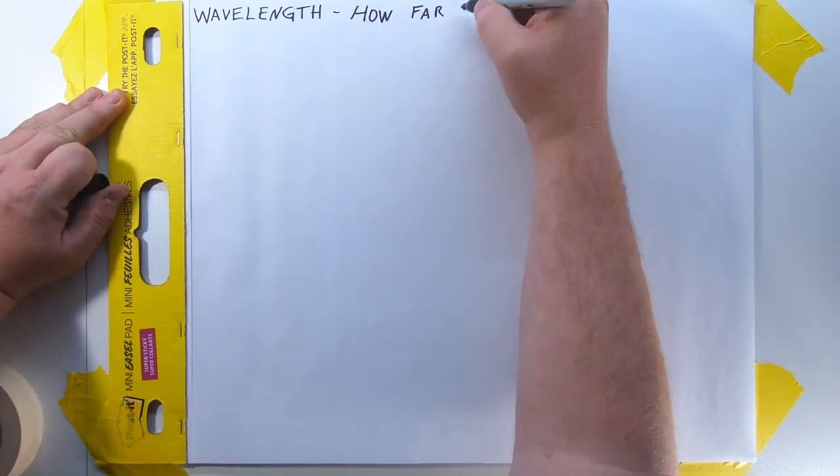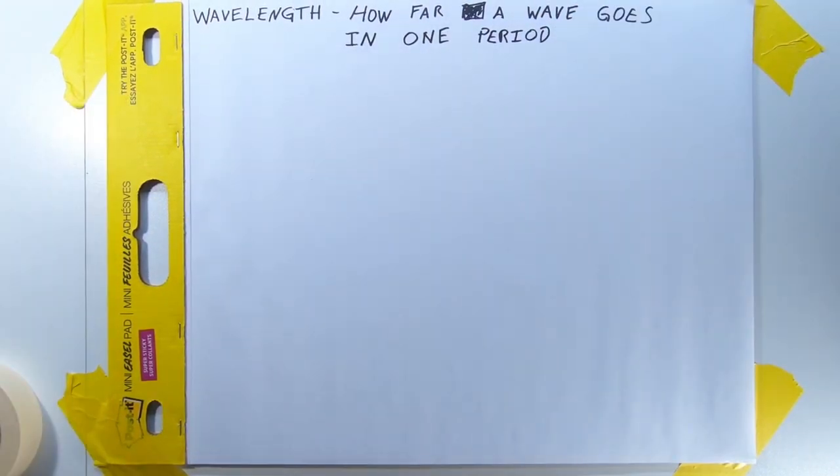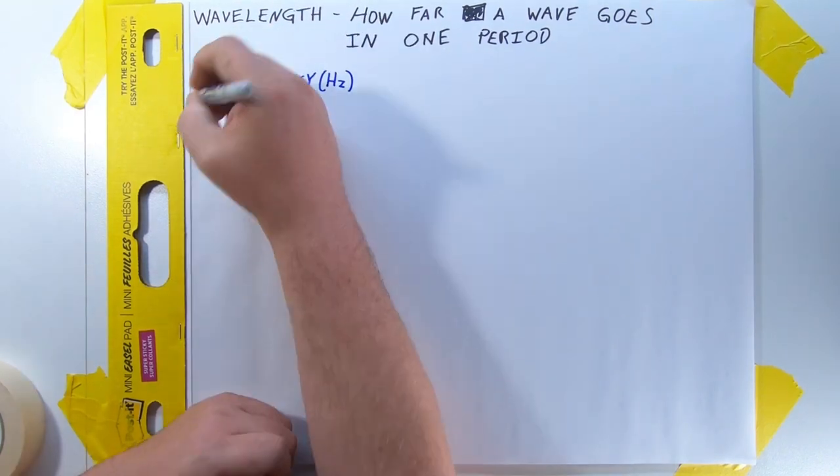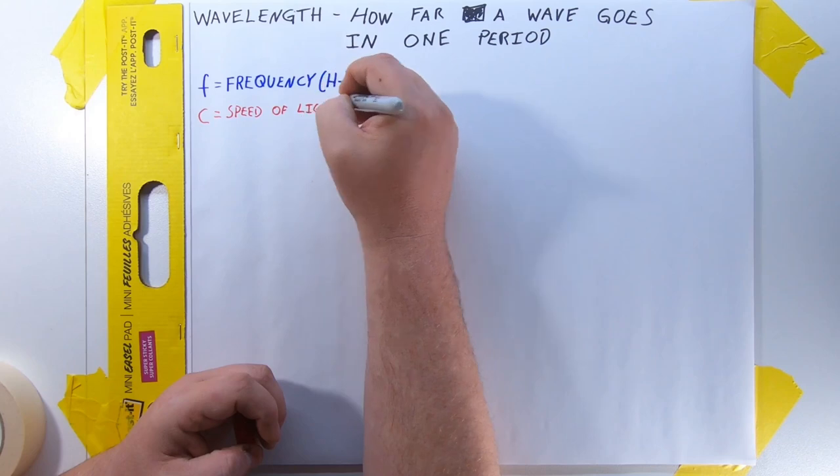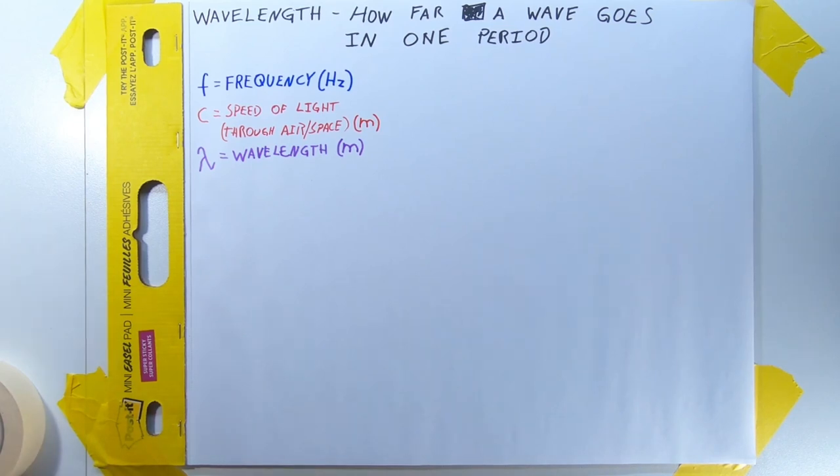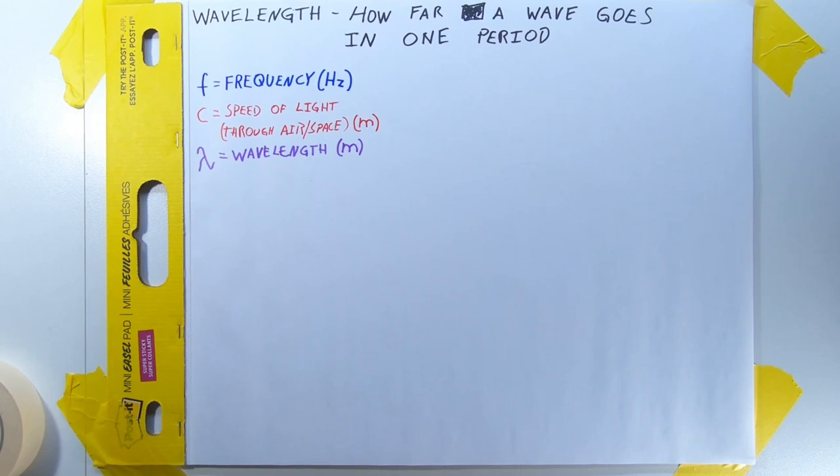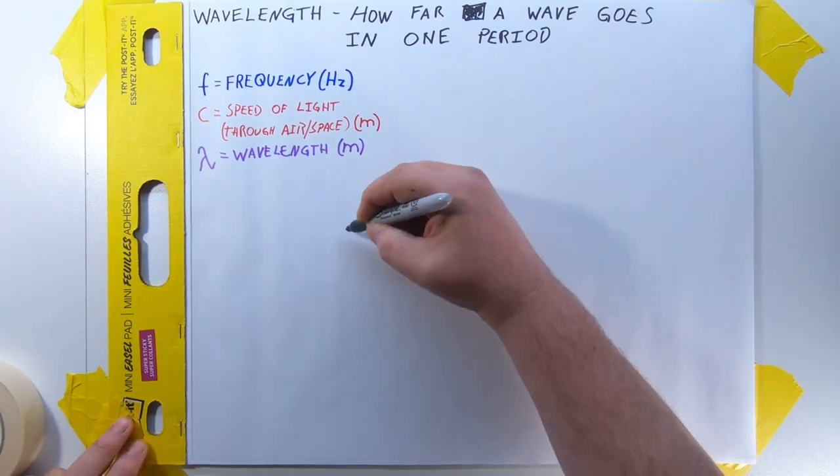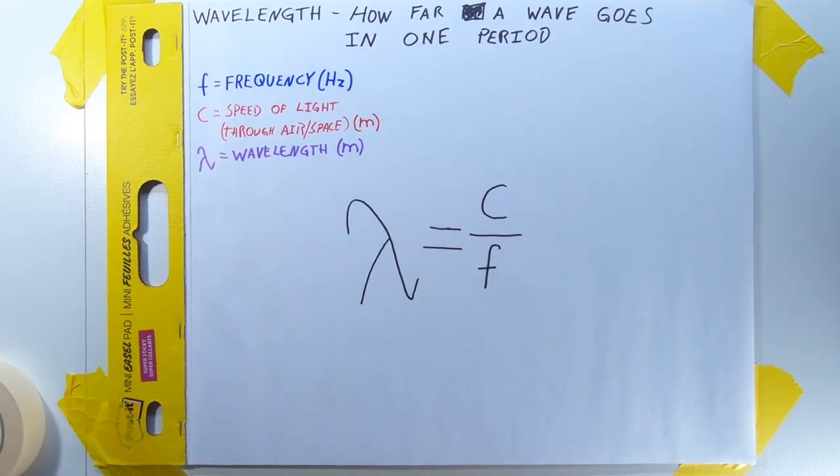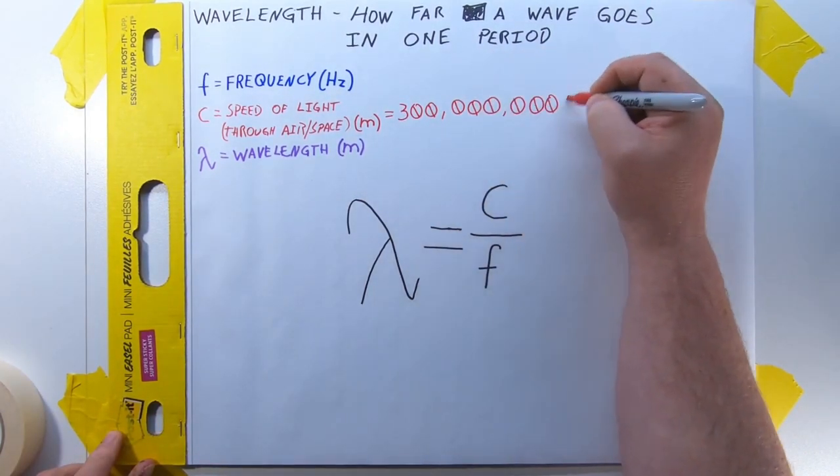We need to calculate wavelength. First, we gotta define our terms. Frequency, that thing we counted just now, is the letter F. The speed of light through air or space is represented by the letter C. And then wavelength, the distance a wave travels in one cycle, uses the Greek letter lambda, which is hard for me to draw. Frequency is measured in hertz, the speed of light is measured in meters, and wavelength is also measured in meters because this is science. The equation is pretty simple. Wavelength equals the speed of light over frequency. The speed of light is fixed at 300 million meters per second.